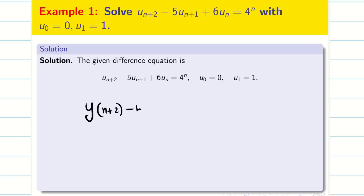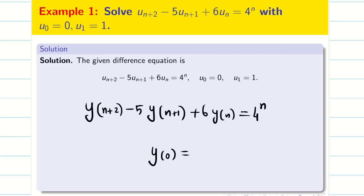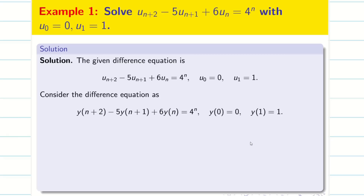The difference equation in our format is: y(n+2) − 5·y(n+1) + 6·y(n) = 4^n, with conditions y(0) = 0 and y(1) = 1. Once you rewrite the problem in our format, write the formulas. Here we need Z of y(n), Z of y(n+1), and Z of y(n+2).